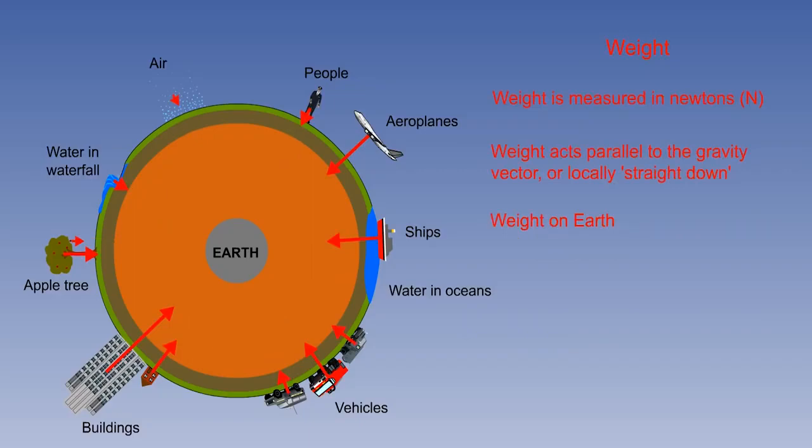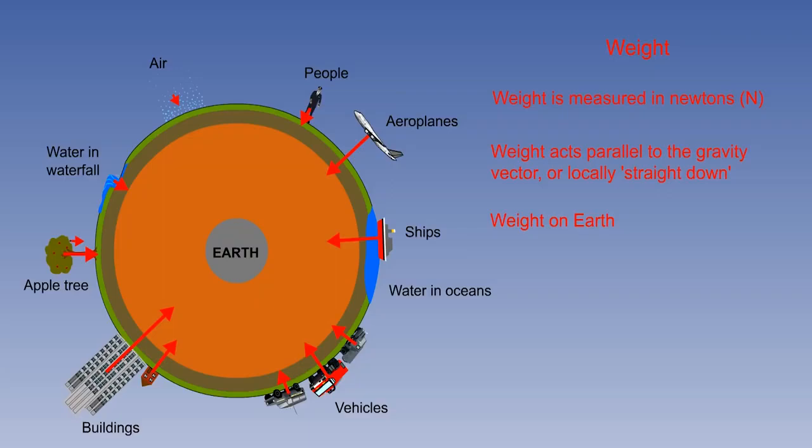Weight is the force that a mass exerts when it is in the gravitational field. Weight acts parallel to the gravity vector, and is locally taken to act straight down. The SI unit for weight is the newton, designated by the symbol N. Weight can be calculated by multiplying the body's mass by the acceleration due to gravity, which is 10 metres per second squared. A 60,000-kilogram aeroplane has a weight of over half a million newtons.